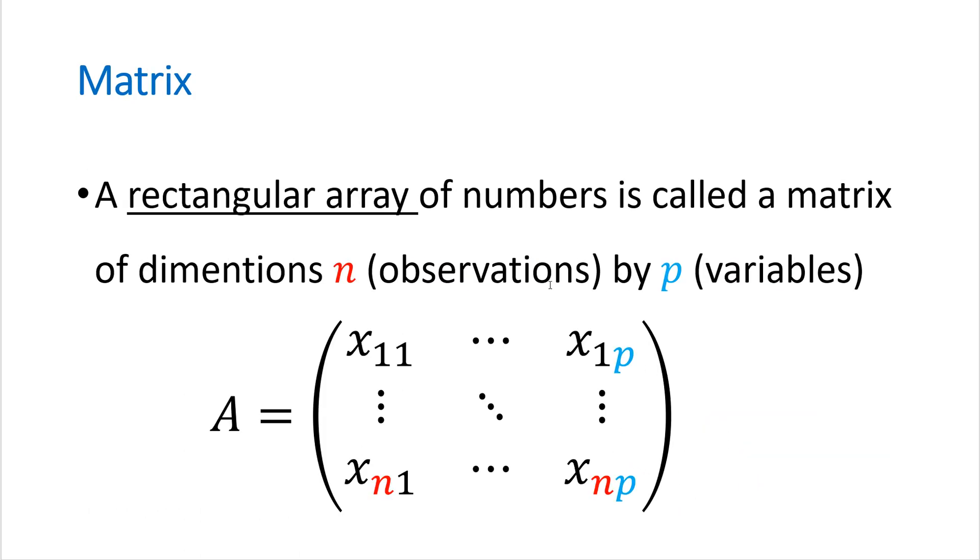We can extend this information to as matrix. So matrix is a rectangular array of numbers. It's called a matrix of dimension n by p. We typically use n for observations and p for variables. So this is n by p matrix. And also it is multivariate data structure.